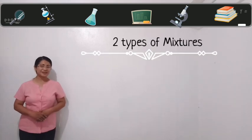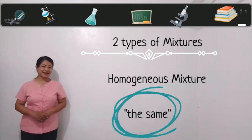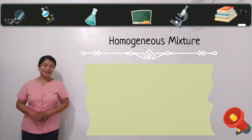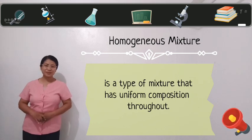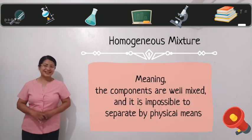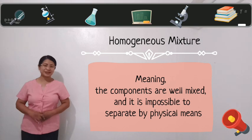There are two types of mixtures. Homogeneous mixture, which means the same. Homogeneous mixture is a type of mixture that has uniform composition throughout, meaning the components are well mixed and it is impossible to separate by physical means.